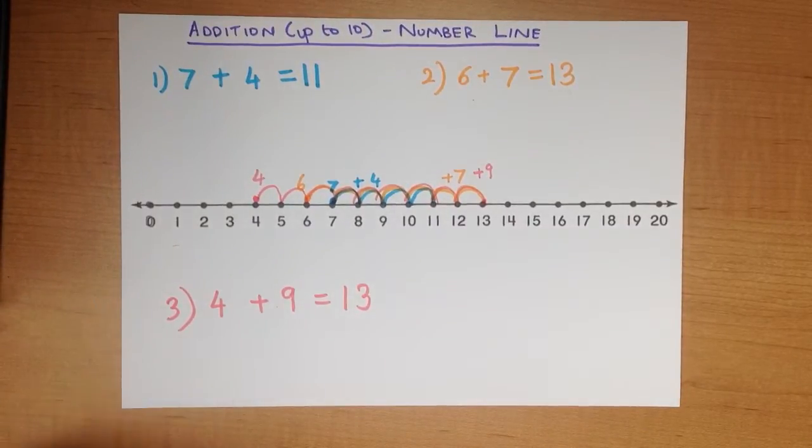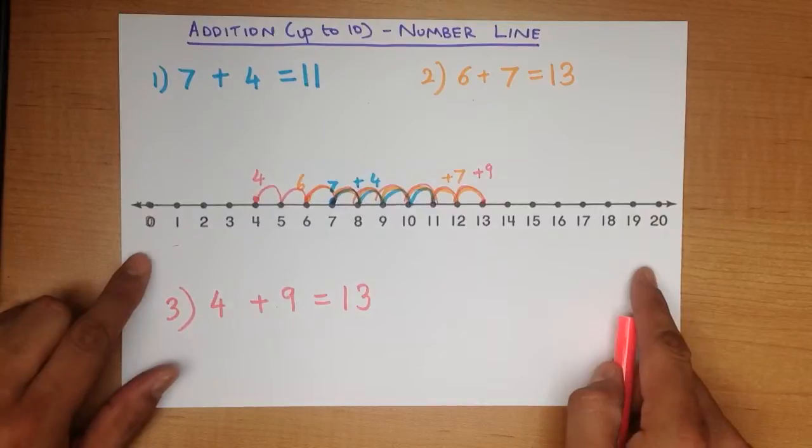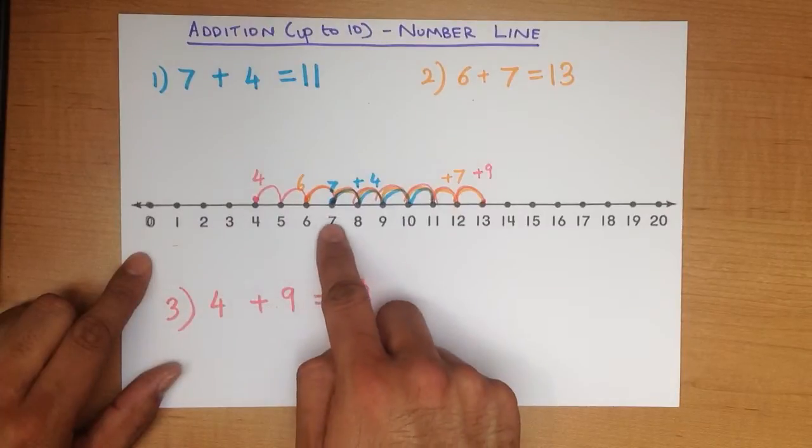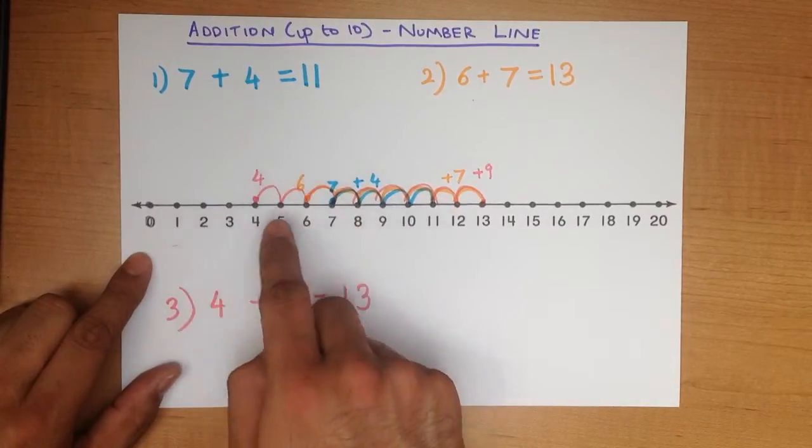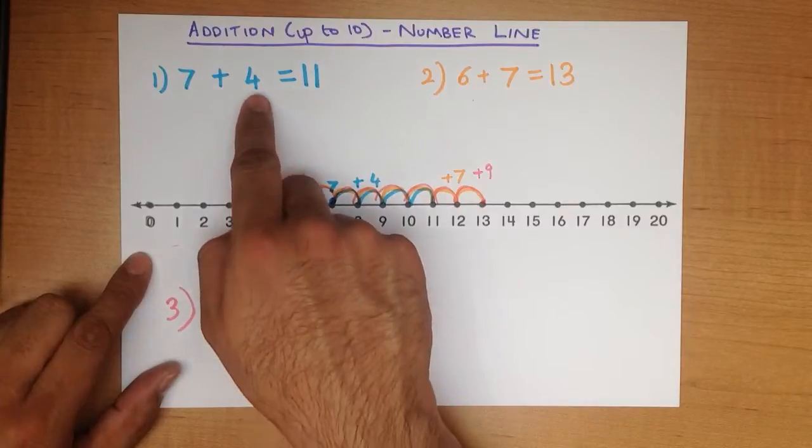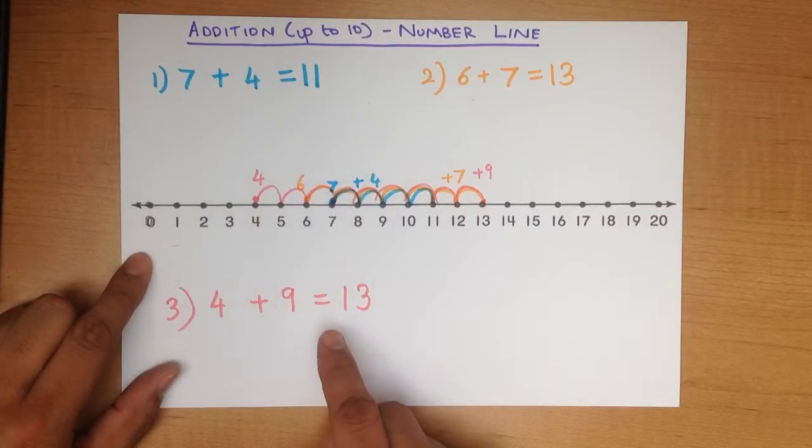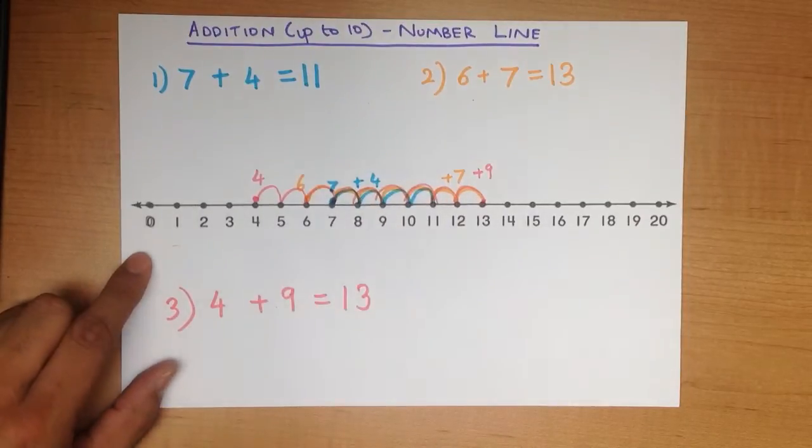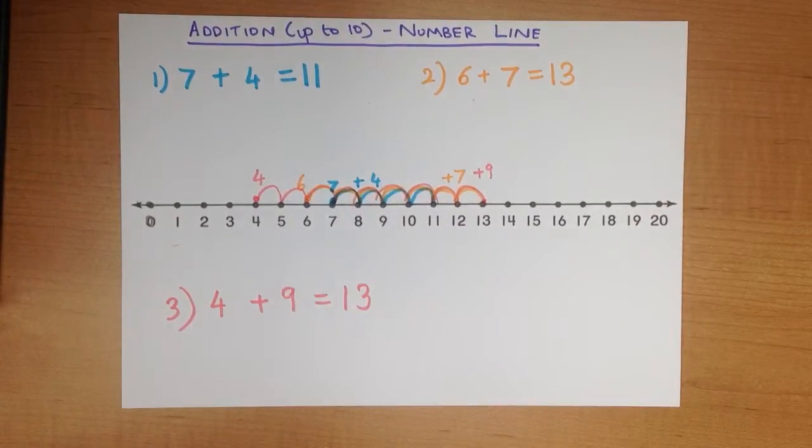And that's how easy it is to use the number line. Always remember, you can draw the number line by yourself in a question. You start off with the first number, and then if it's plus, you are going forwards. Count how many jumps you need to go forward, and you end up with the right answer. And that is addition of numbers up to 10 using the number line.